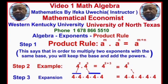If we go to step number three, we use expansion to clarify the rule. 4 raised to the power 2 is the same thing as 4 times 4, and 4 raised to the power 3 is the same thing as 4 times 4 times 4.